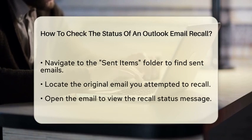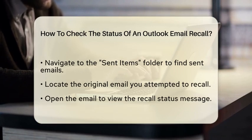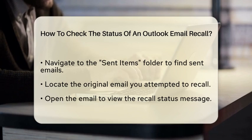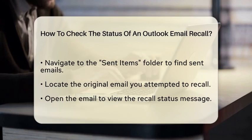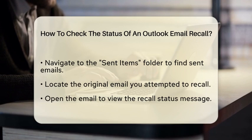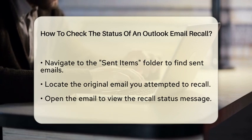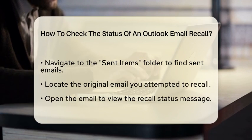Begin by opening Microsoft Outlook and navigating to the Sent Items folder. Here, you will find all the emails you have sent, including the one you attempted to recall. Locate the original email that you wanted to recall.